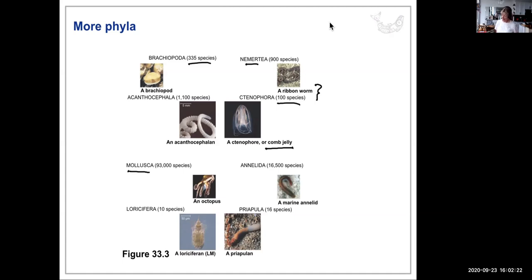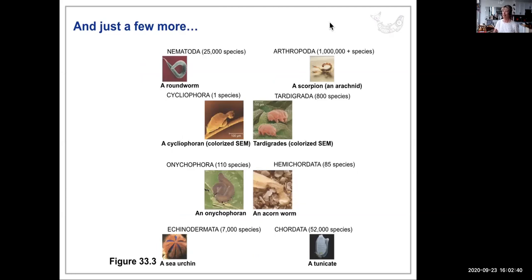We'll discuss Mollusca in depth — about 93,000 species. Annelida, the segmented worms, have about 16,500 species. Nematoda (roundworms) we'll look at in the lab, and Arthropoda as well since there are marine species, and you'll do a small project on those.